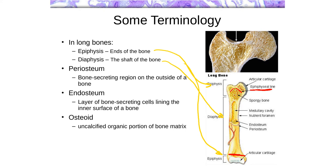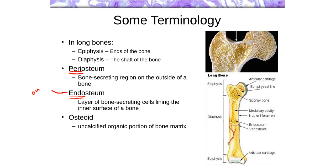The other terms I wanted to point out that will be important in our discussion of the histology are the periosteum and the endosteum. What I'm underlining here are the prefixes, peri and endo. You've seen endo before in the endothelium — endo means within, so on the inside of something. The endothelium was the lining of the inside of a blood vessel. The endosteum is going to be referring to a layer of osteoblasts, the bone-secreting cells, on the inner surfaces of bone.